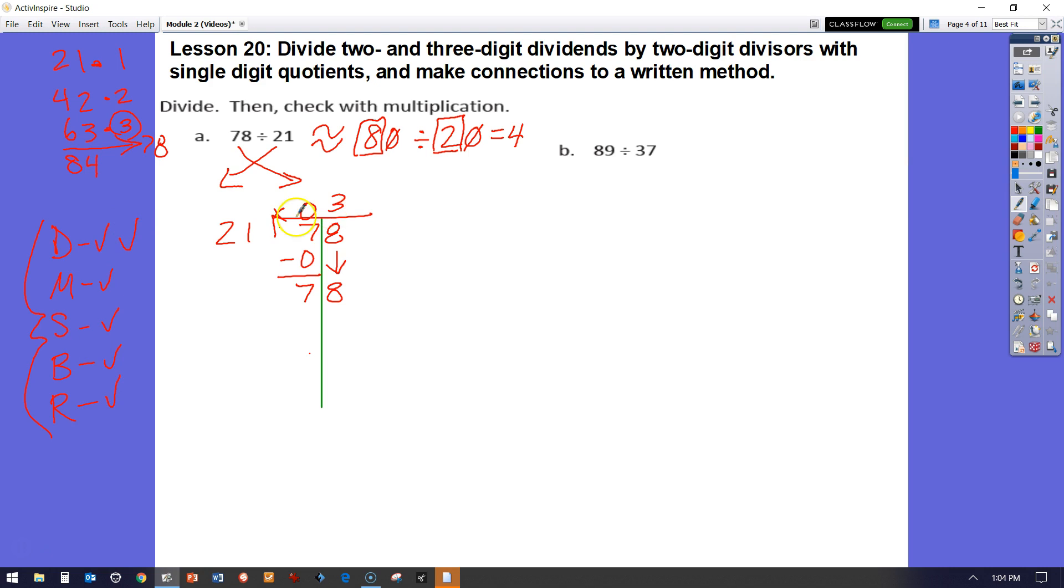Now I have just repeated every step. Now I'm on my division again. I think 21 times 3 is 63. Subtract. Now I have 8 minus 3 is 5. 7 tens minus 6 tens is 1 ten. And I am finished.